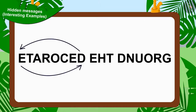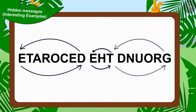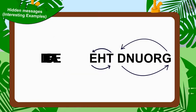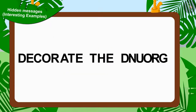Your answer is absolutely correct. In this hidden message of Jeev's, the alphabets of the words are written in reverse order. Jeev's second hidden message is: Decorate the ground.